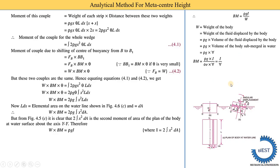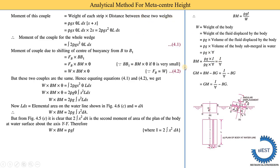But we need to find the metacentric height GM. We have the equation for BM. So GM = BM − BG. Substituting: GM = I/V − BG. This is our final equation for GM — the metacentric height derived using the analytical method.